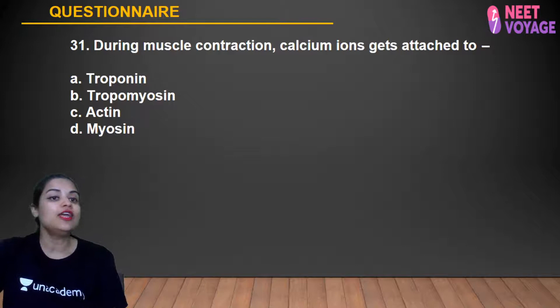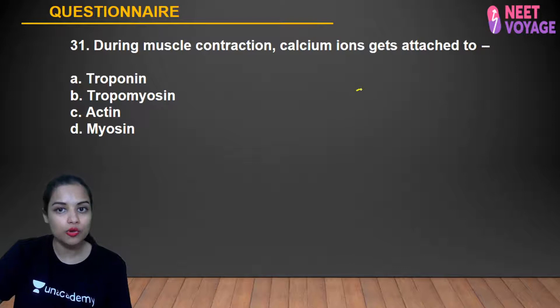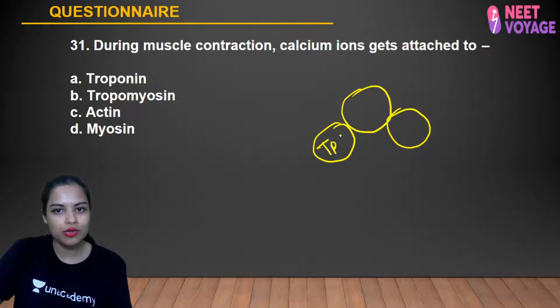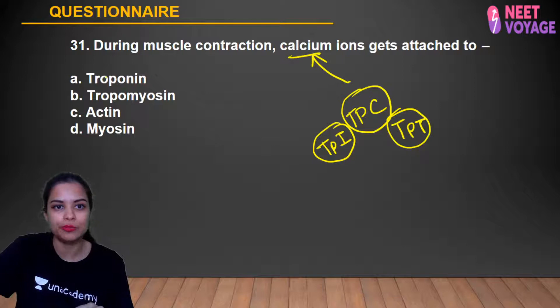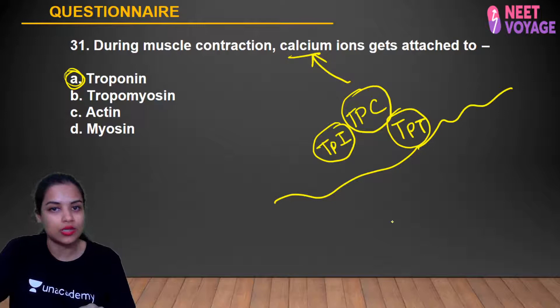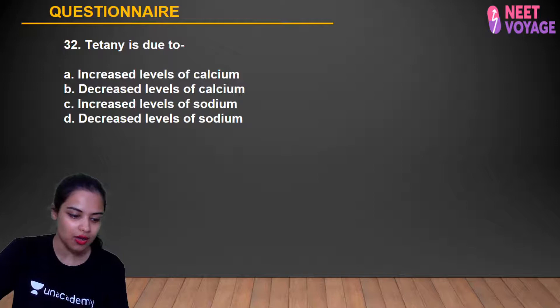Question 31: During muscle contraction, calcium ions get attached to what? Troponin is a trimeric protein with three subunits: Troponin I (TPI) — blocks the myosin binding site on actin; Troponin C (TPC) — binds calcium ions; Troponin T (TPT) — attaches to tropomyosin. So calcium attaches to Troponin C. A is the right answer. Samreen, Anshika, Kamal, Shashank, Sabah, Alok, Simran, Anusha, and Tanusha gave the correct answer.